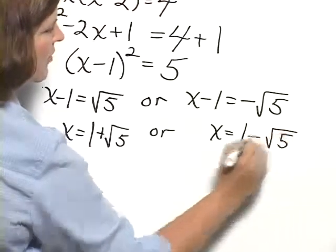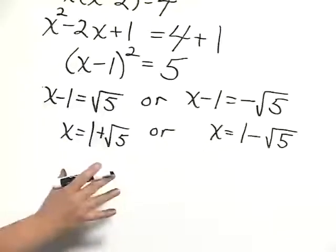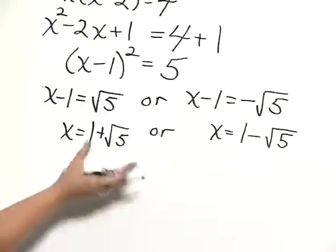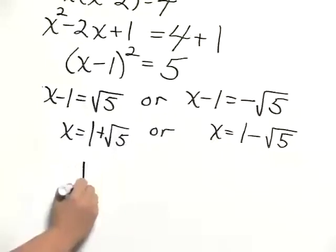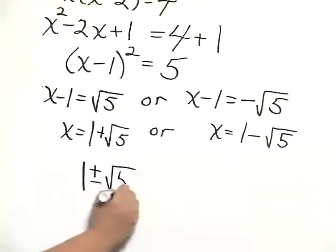And remember, we only needed to solve for x. So we're done, and we can state this a little bit more clearly, or succinctly I guess, saying that x is 1 plus or minus the square root of 5.